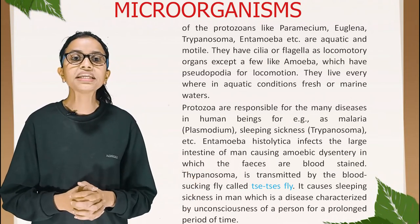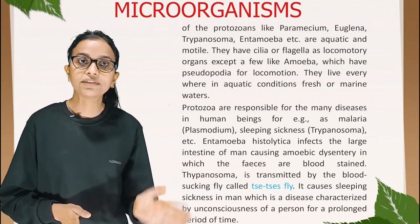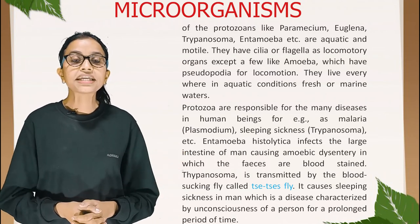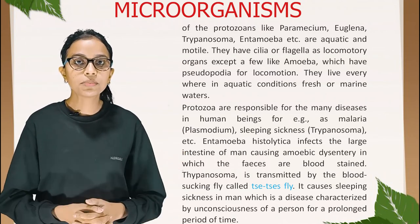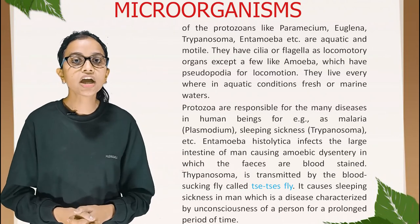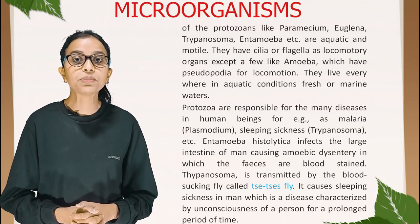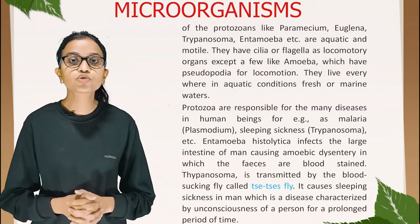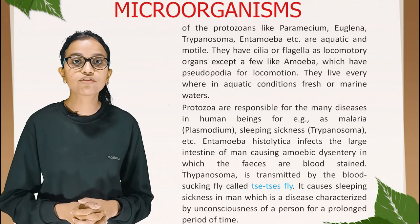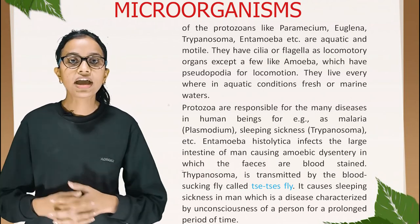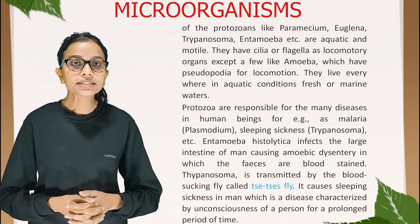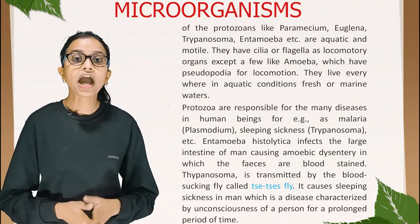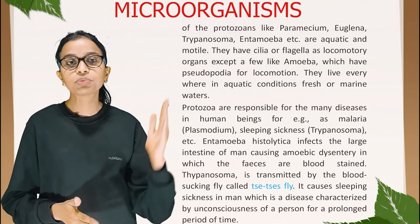Protozoa are responsible for many diseases in human beings, for example malaria (Plasmodium) and sleeping sickness (Trypanosoma). Entamoeba histolytica infects the large intestine of humans, causing amoebic dysentery in which the faeces are blood-stained. Trypanosoma is transmitted by the blood-sucking tsetse fly and causes sleeping sickness — a disease characterized by unconsciousness for a prolonged period of time.